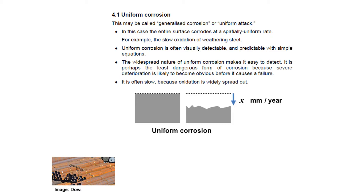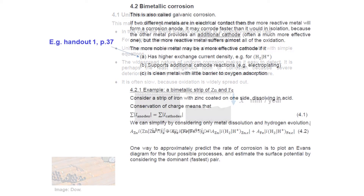Uniform corrosion looks ugly, but it's in many ways the best possible case when active corrosion is happening. The speed is likely to be pretty slow because all the oxidising action is equally distributed over a large metal surface. Unlike bimetallic corrosion with a small concentrated anode, we don't have catastrophically fast speeds — just slow or moderate corrosion everywhere. So it looks horrible, but it's actually not so bad.